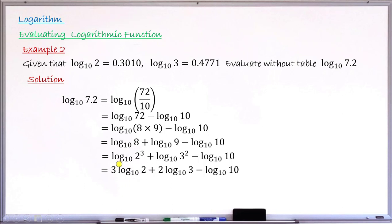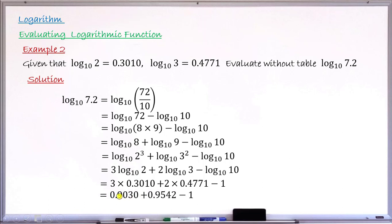Substituting: 3 times 0.3010 plus 2 times 0.4771, minus 1. Performing the multiplication first: 3 times 0.3010 gives 0.9030, and 2 times 0.4771 gives 0.9542. Then 0.9030 plus 0.9542 minus 1 gives 0.8572. This is the value of log base 10 of 7.2.